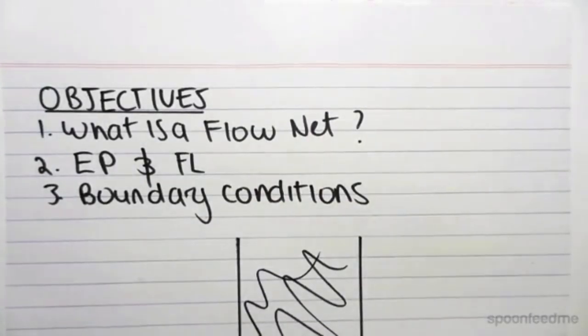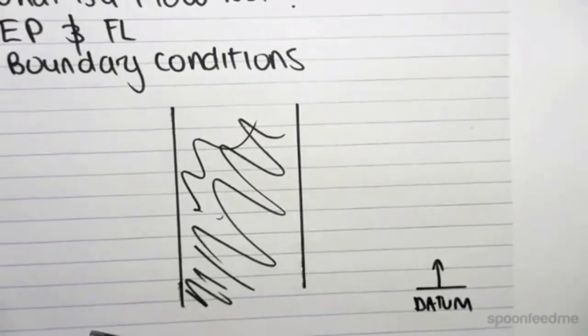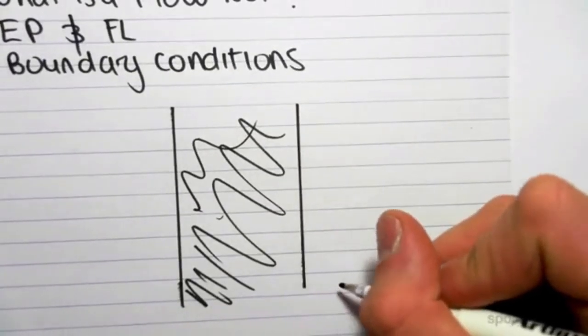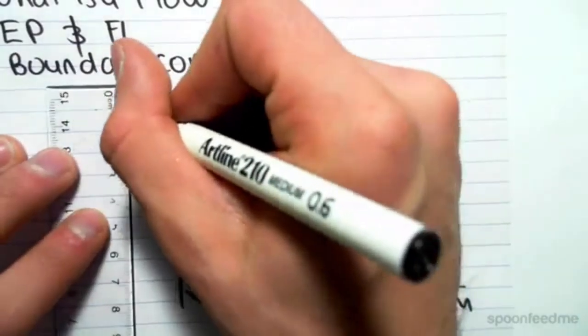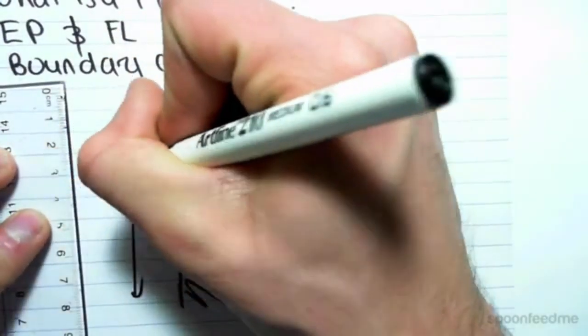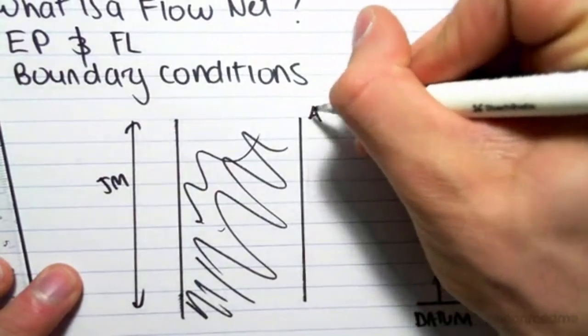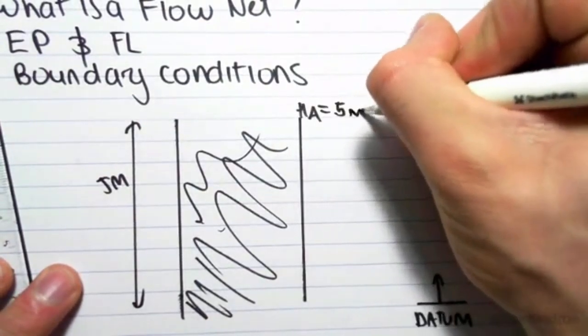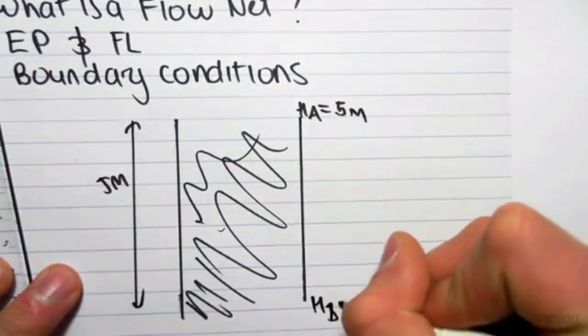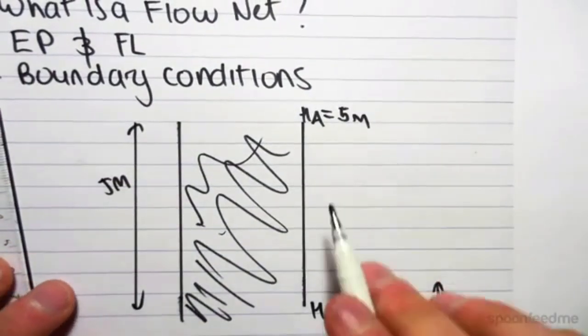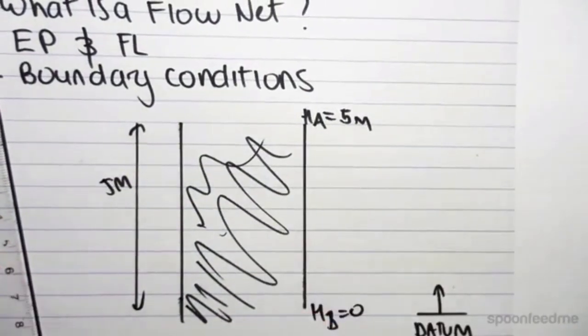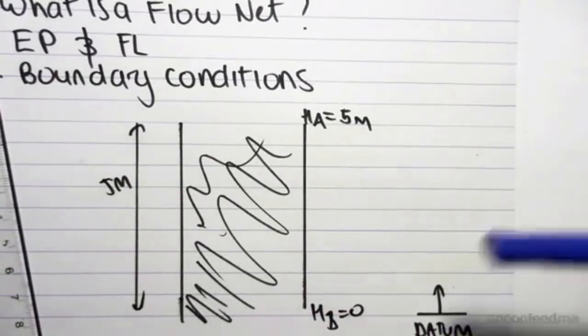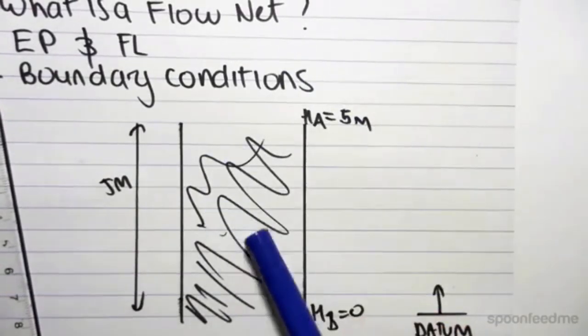Let's say that our datum is at the bottom. Let's say that this height was 5 meters. Let's call this point A. So the head at A would be 5 meters, and the head at B would be 0. Just because of the elevation, there's no pressure at all in this system. So what's going to happen is that the water is going to come if we pour water through the system and flow through the soil.